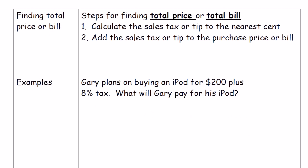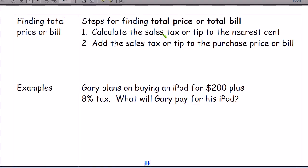For the next set of problems, you need to find the total price or total bill. To do that, first find the tax or tip to the nearest cent — just like we did in the last two problems — then add the tax or tip to the purchase price. That's how we find the total price or total bill.